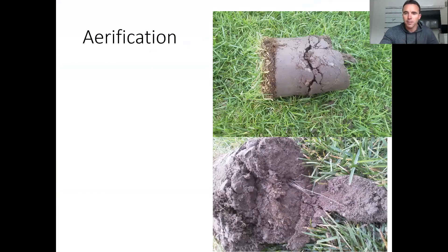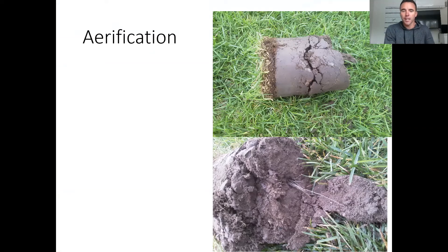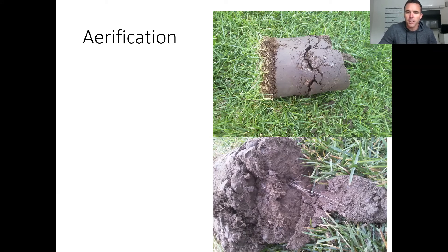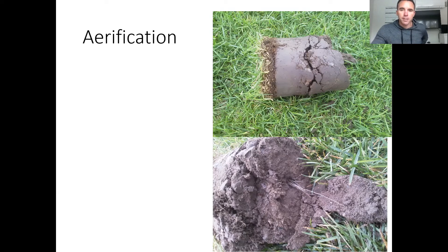Mowing and irrigation are considered our primary cultural practices because they're done very frequently. The next few are considered secondary cultural practices because they're not done as often — but they are just as important. Under an organic turf care program they need to be more intensive, because rather than turning to a pesticide we need to alleviate underlying conditions. When we see a weed, we think about why those weeds are proliferating and why our turf grass isn't. One of those secondary cultural practices is aeration, especially on heavily trafficked areas where the soil is getting compacted.